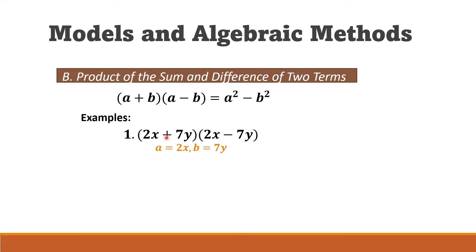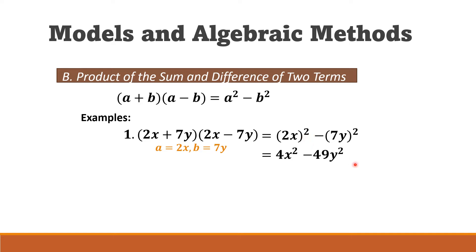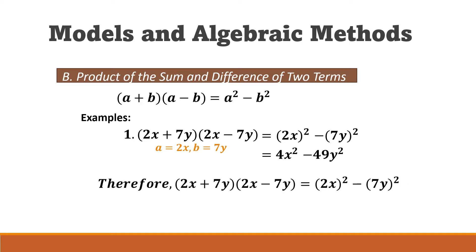Instead of using the FOIL method, we square only the first term and subtract the square of the second term: (2x)² − (7y)² = 4x² − 49y². That is our final answer to this example.